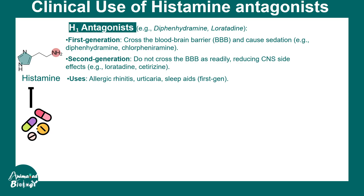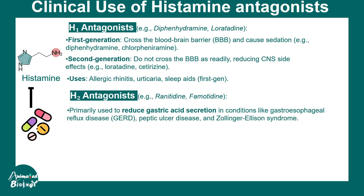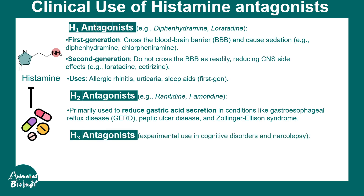H1 antagonists are used for allergic rhinitis, general allergies, urticaria, and as sleep aids. H2 antagonists, such as ranitidine and famotidine, are used to reduce gastric acid secretion and are important for patients suffering from peptic ulcer disease or Zollinger-Ellison syndrome.